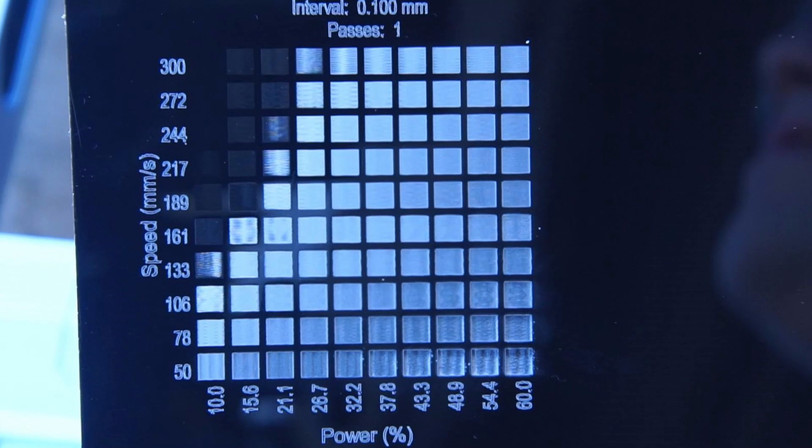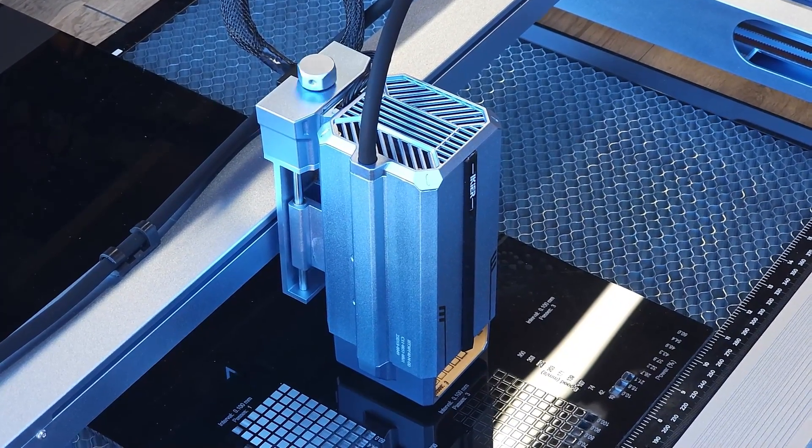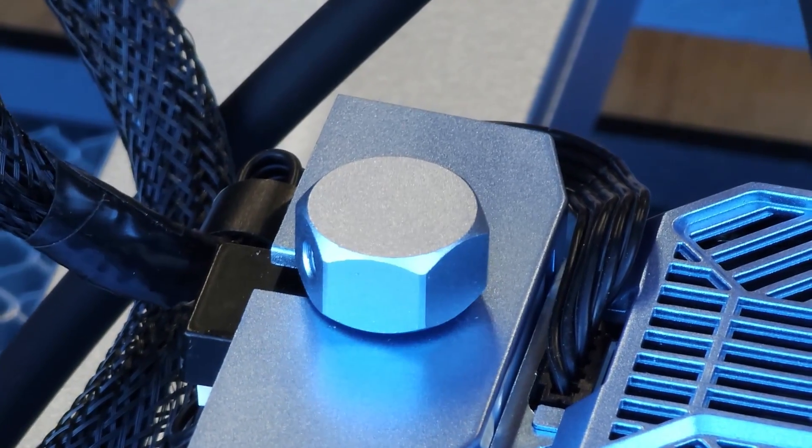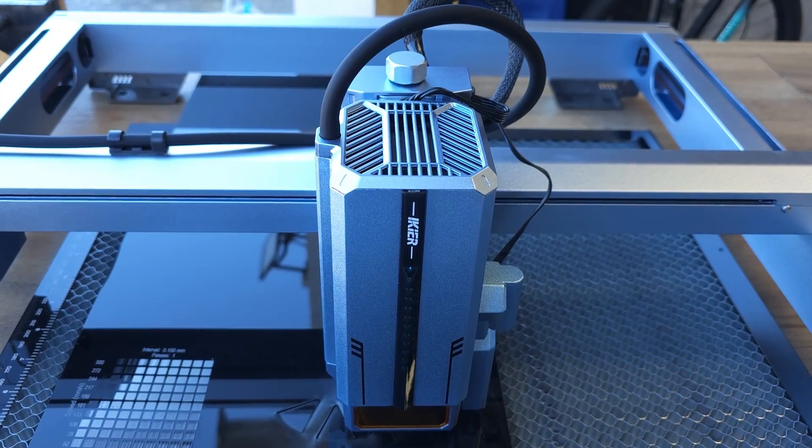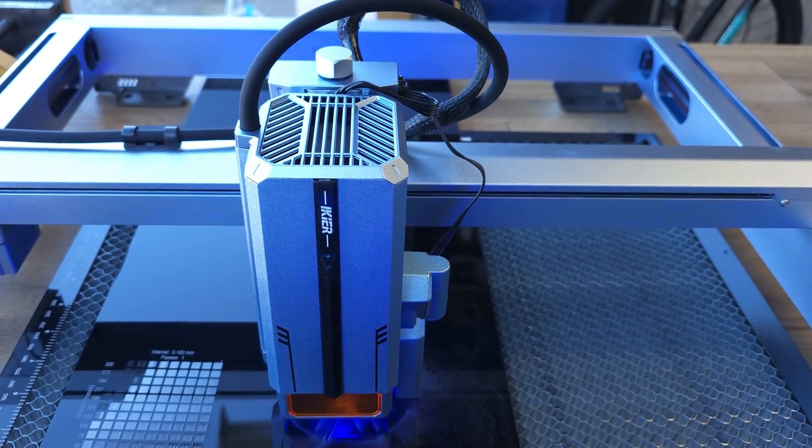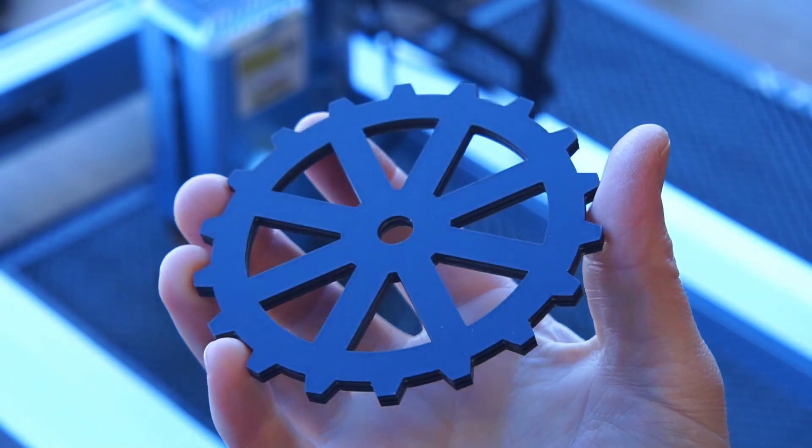When it comes to engraving settings, 300mm per second travel at 30-40% power yielded good results. For this cut I enabled Z axis stepping. What this means is after each pass the Z axis would drop down 1mm. This helps keep the focal point at the optimum height for faster and more efficient cutting.